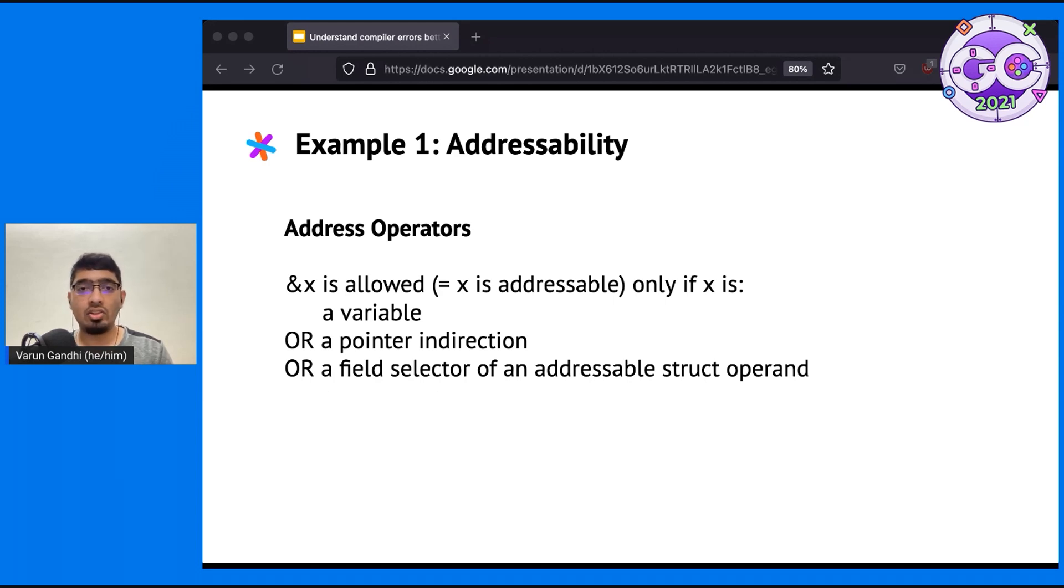Now, let's see how this definition applies to the code example from before. The relevant case is the field selector one, since in all three cases, we're trying to take the address of a field. So, what exactly is the addressable struct operand part? We can answer that recursively by examining the definition of addressable again. Temp is addressable because it is a variable. Hence, temp.s is the field selector of an addressable struct operand, and it too is addressable. i.star x is a pointer indirection, hence it is addressable. Hence, i.star x.s is also addressable because it is a field selector of an addressable struct operand.